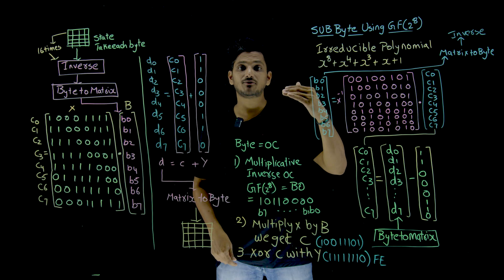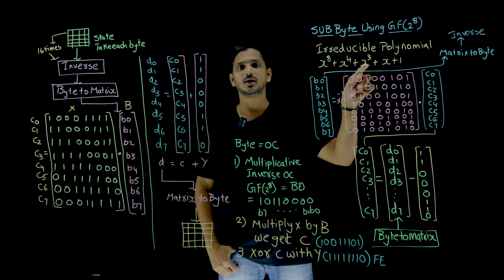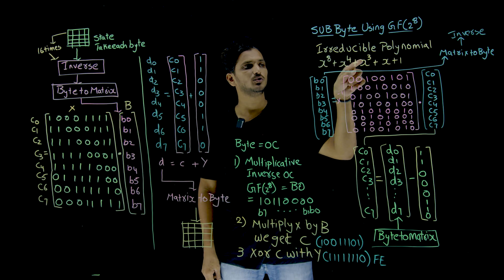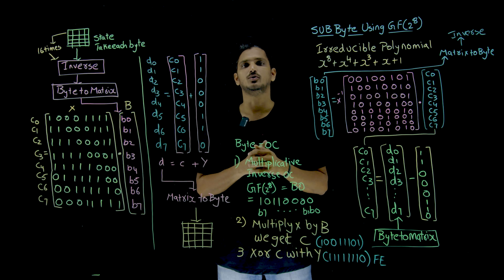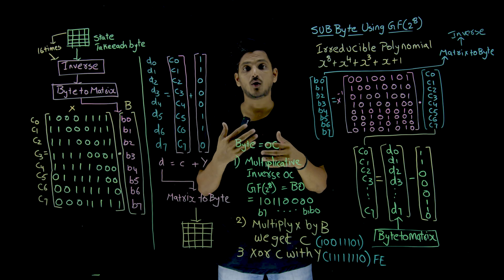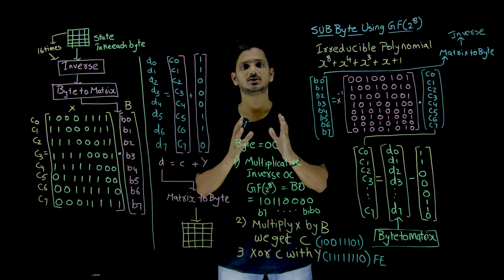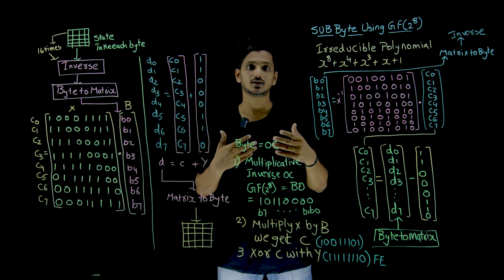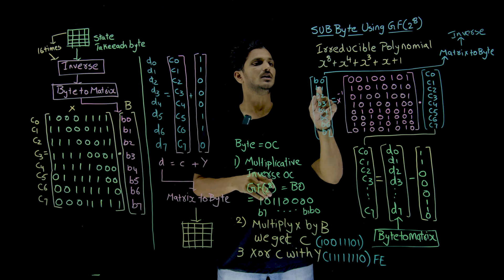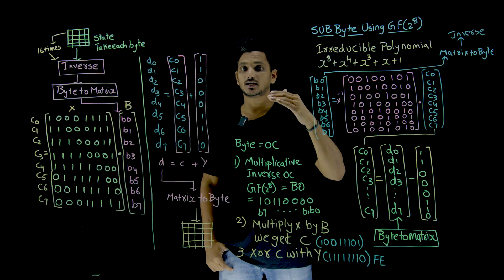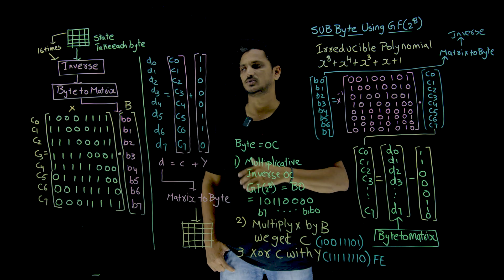Coming to today's class, in the GF of 2 power 8 we are going to use this irreducible polynomial — means prime polynomial — which we are going to use in order to do the division operation. Now, try to understand; it will be a little bit confusing. Concentrate a bit more here in this class. If you do not understand, watch it multiple times and try to understand it. First we will understand the procedure, then with an example we are going to understand how we apply the procedure.